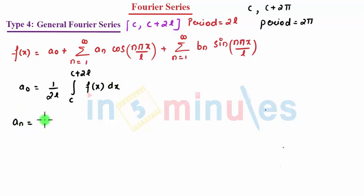Your an comes to 1 by L, integral from C to C plus 2L of f(x) cos(nπx/L) dx.